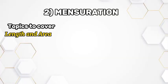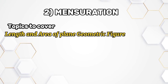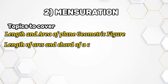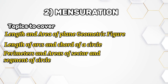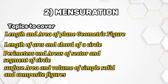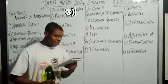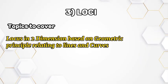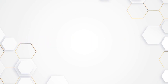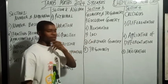In mensuration, the topics are: A — length and area of plane geometrical figures; B — length of arc and chord of a circle; C — perimeters and area of sectors and segments of a circle; D — surface area and volume of simple solids and composite figures. In loci, you only have loci in two dimensions based on geometric principles relating to lines and chords.